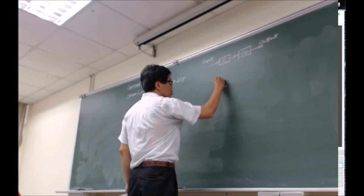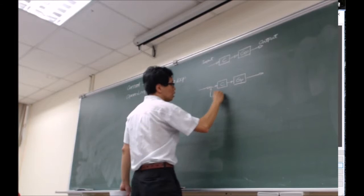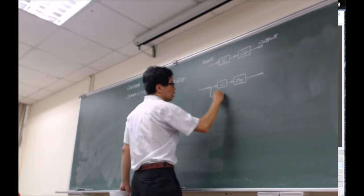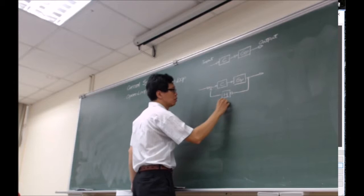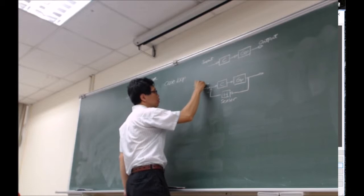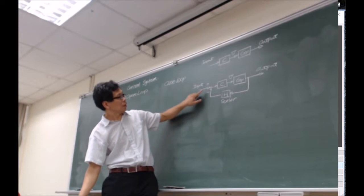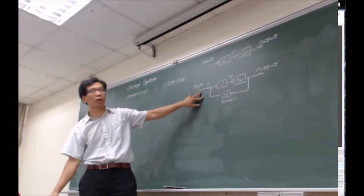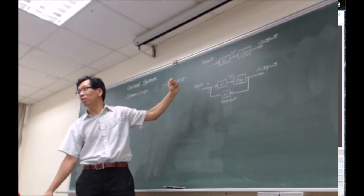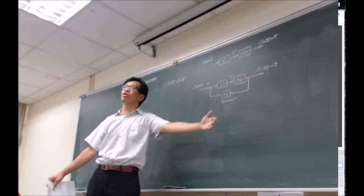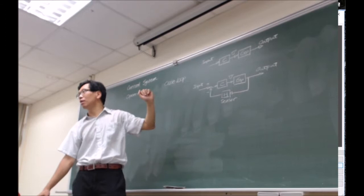For a closed loop system, it's going to be a little bit different. Instead of sending out a signal directly, I have a sensor. The control command depends on the difference between input and output, meaning we determine our control signal based on the error. If this error is zero — steady-state error equals zero — then no output is generated because the system has achieved its goal.